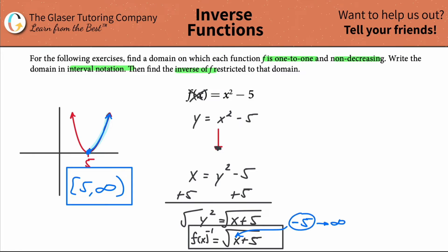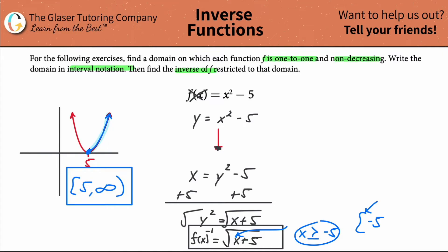Anything larger than or equal to negative five. You could write x must be greater than or equal to negative five. In interval notation, you'd say negative five — using a bracket to include that number — all the way to infinity, with a parenthesis since infinity is not a number, it's an idea. This is the domain of the inverse in interval notation.